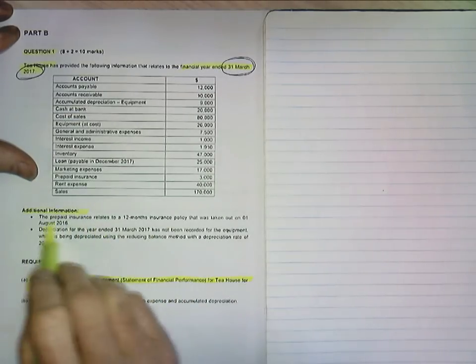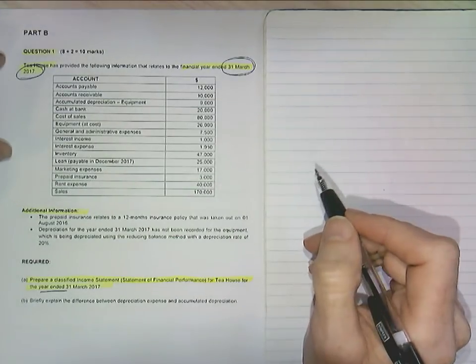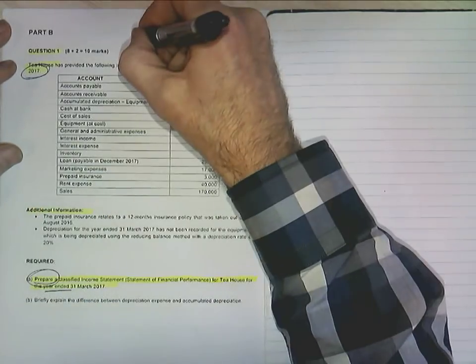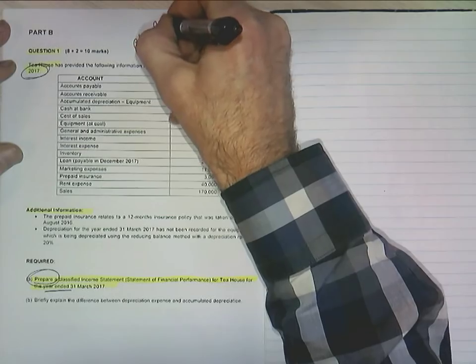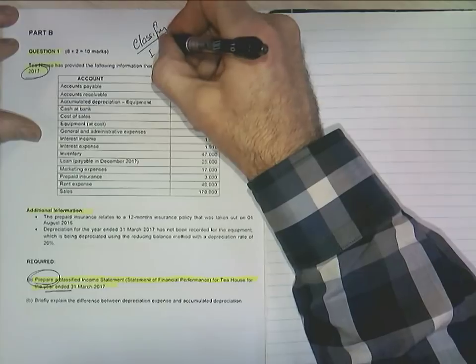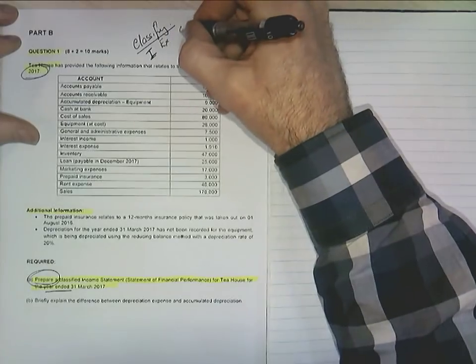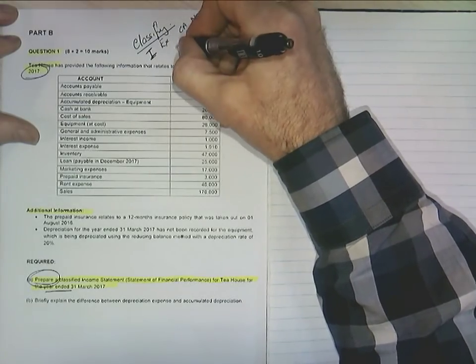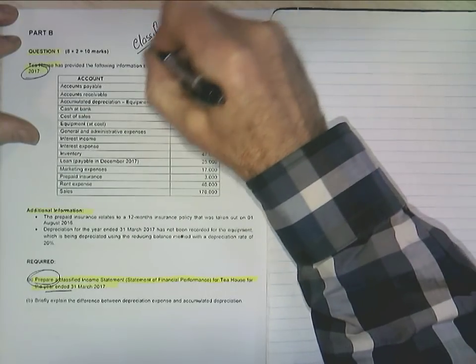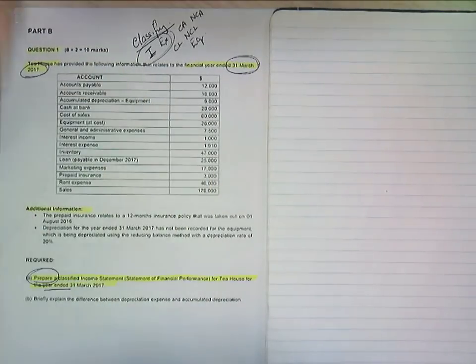And we've given some additional information. My additional information relates to a few things. But the first thing I want to do when I go through an exam, when asked to prepare a financial statement, any sort of financial statement, is that I've got to classify. Now, when we're classifying for an income statement, it's income and expenses, but there will be a few more than that in this one. There will be current assets, non-current assets, current liabilities, non-current liabilities, and equity. So we want to make sure that we're capturing these for this financial statement.